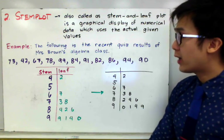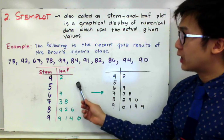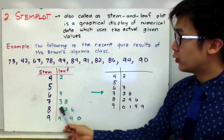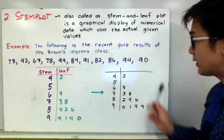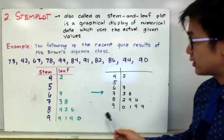Another way on how to enhance your stem and leaf plot, or stem plot, is to arrange your leaf into an increasing order. So this is what I did right here, so it did not change the behavior of the graph.